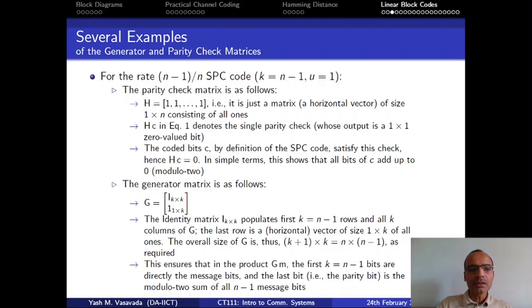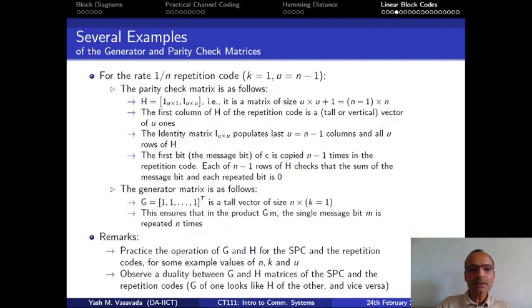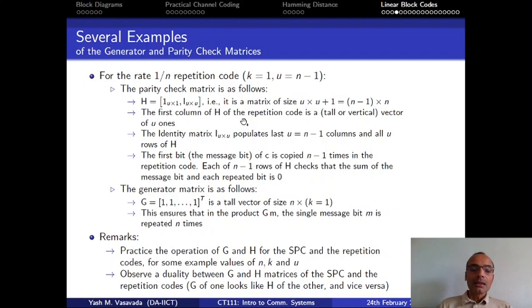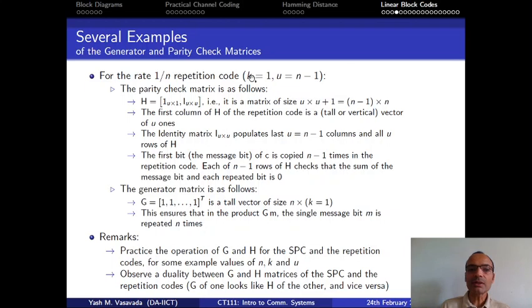Let us take one more example for the rate 1/n repetition code, and we will see what the parity and generator matrices look like. The generator matrix G for the repetition code is probably easier to understand first. For the repetition code, G is just a vector of all ones of size n×k, but k is equal to 1, so G is nothing but a tall vector of all ones.